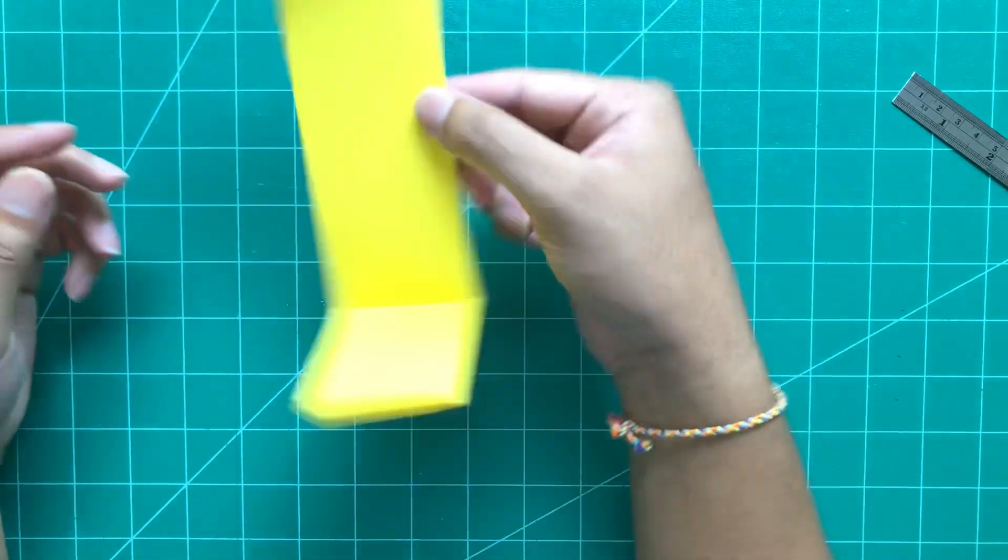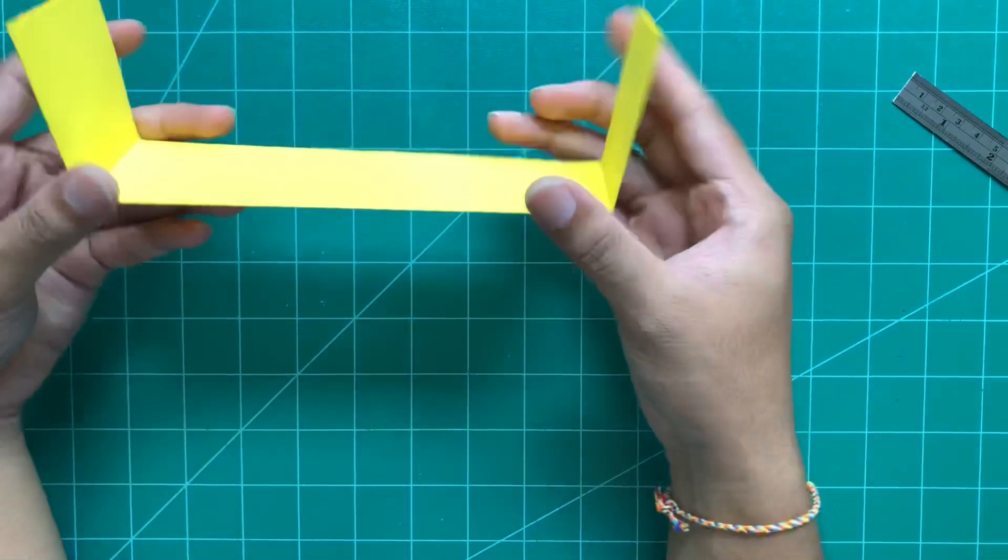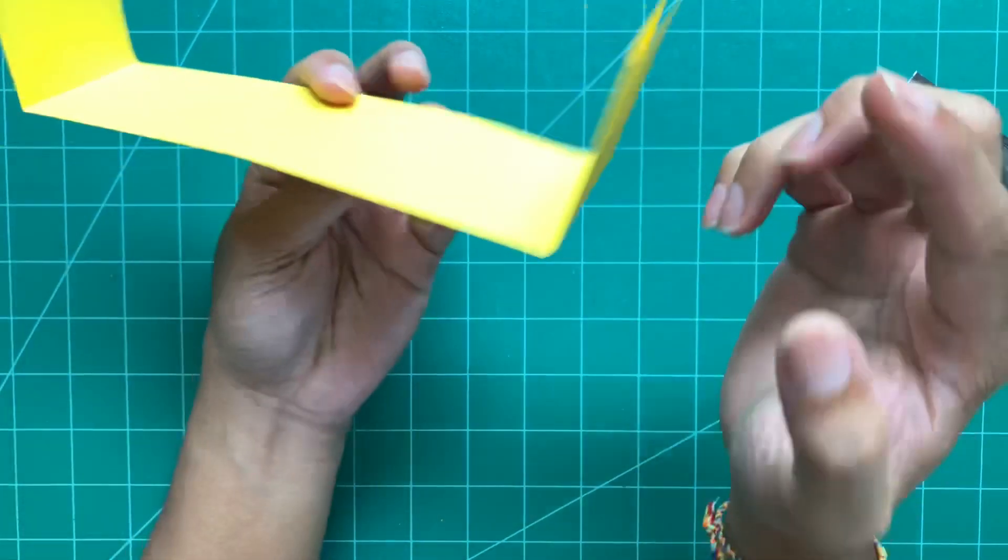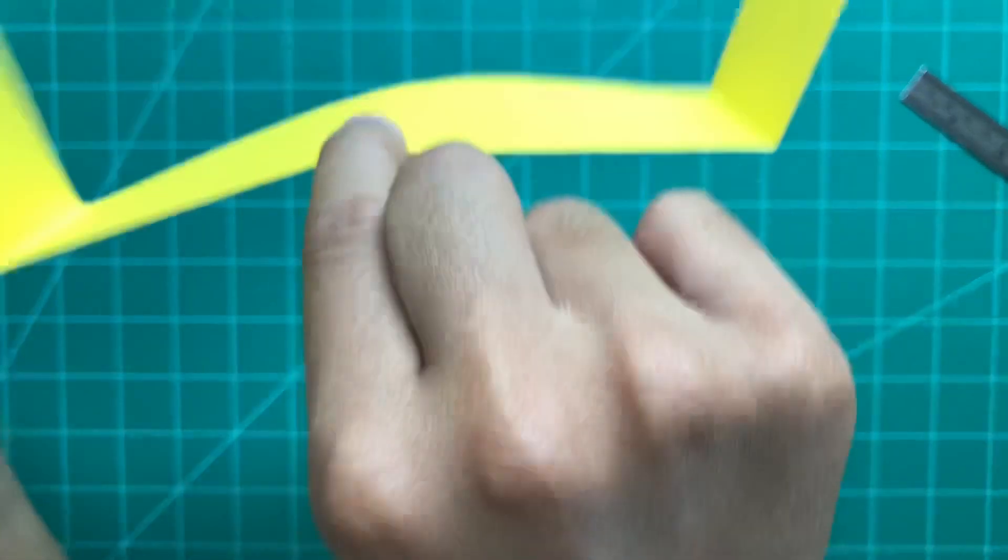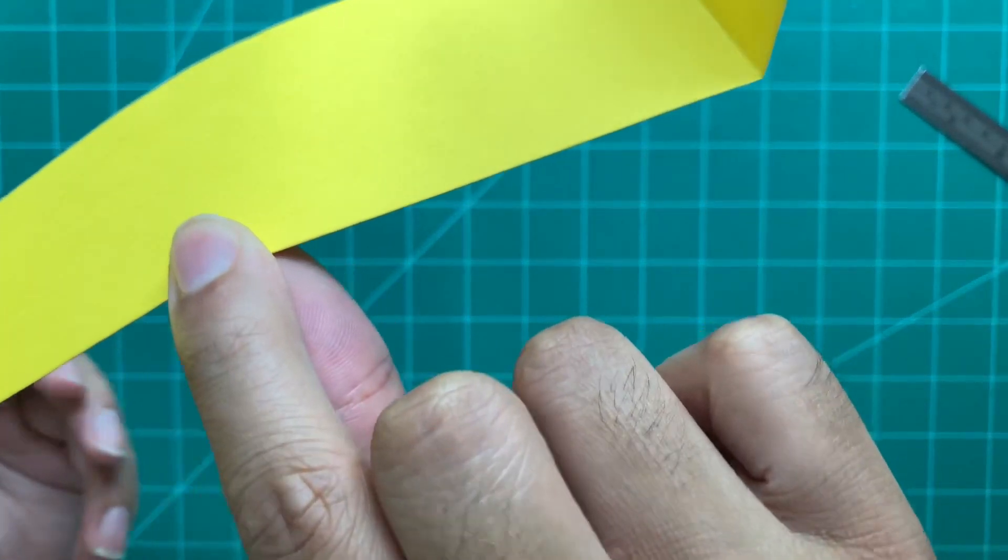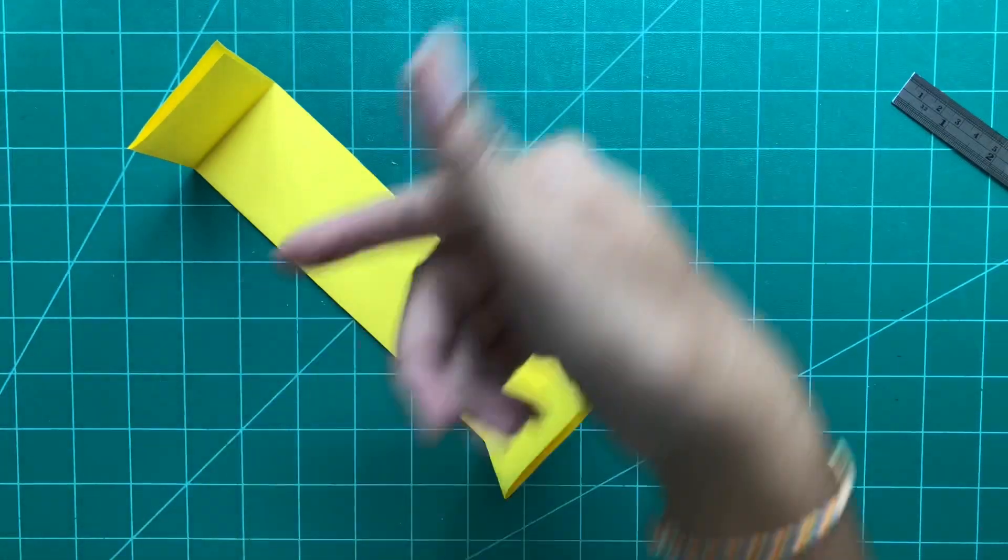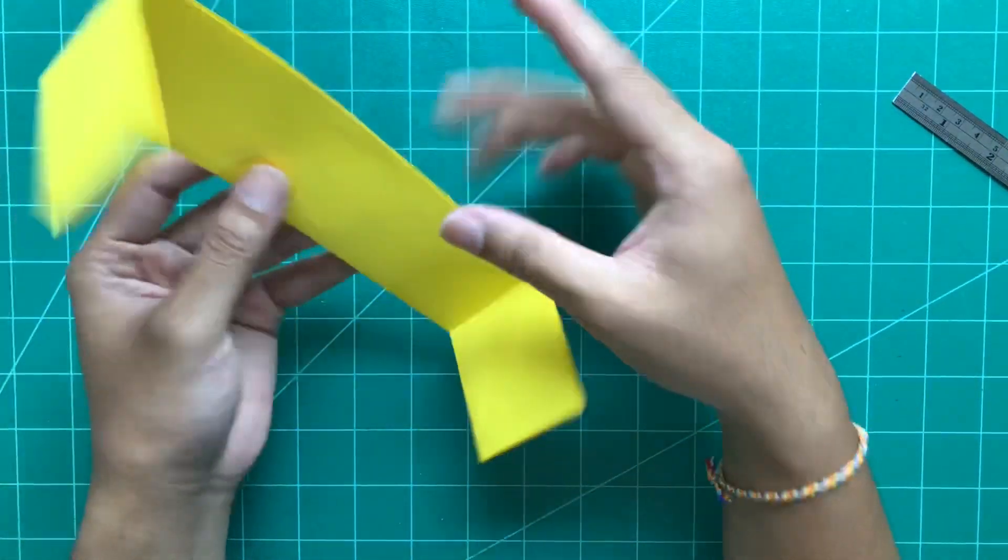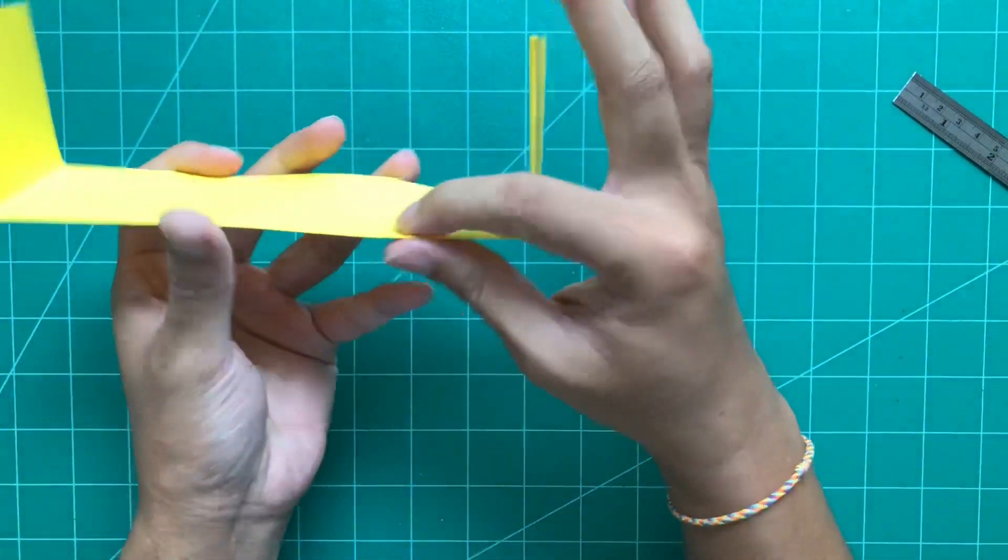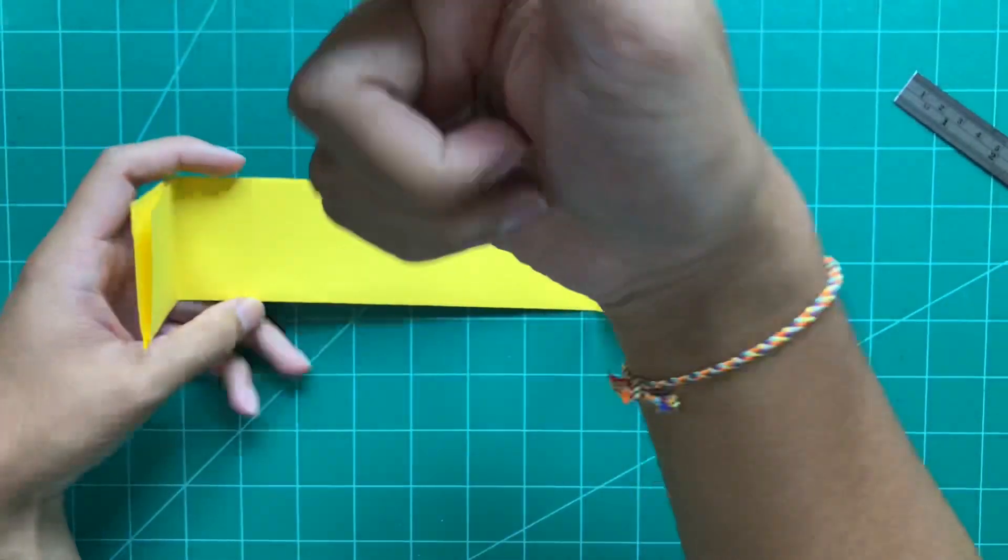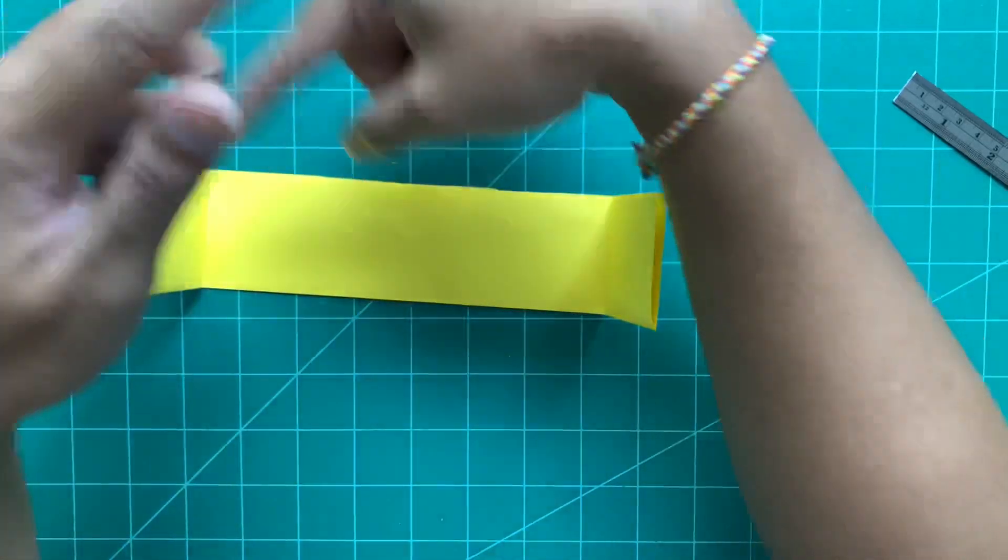This here, the intersection portion. We will fold from here using the edge of the paper.